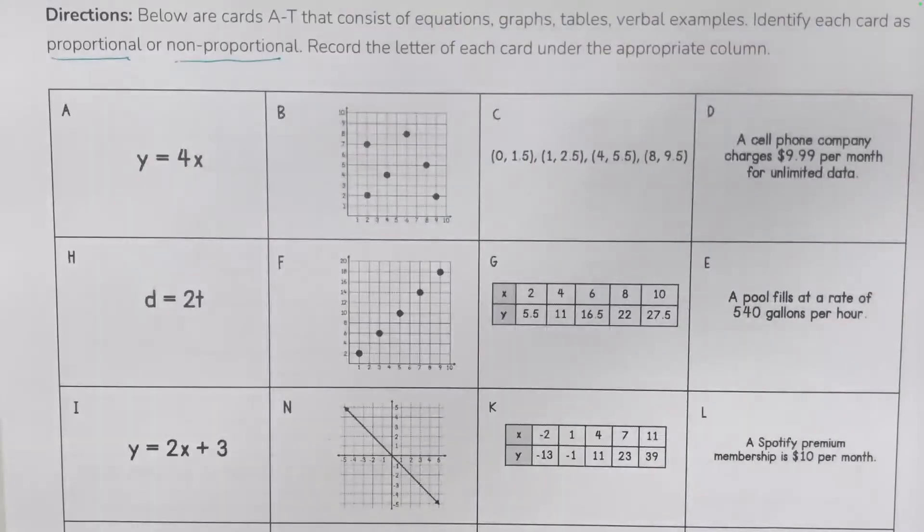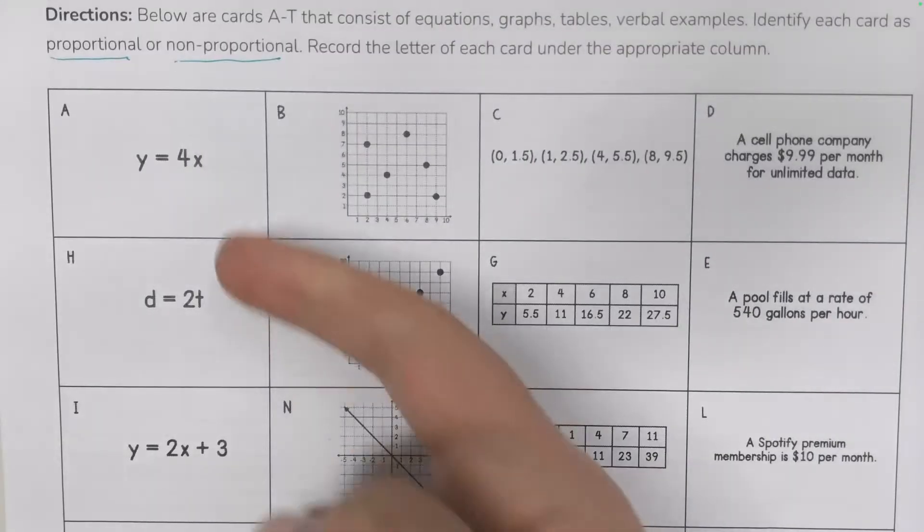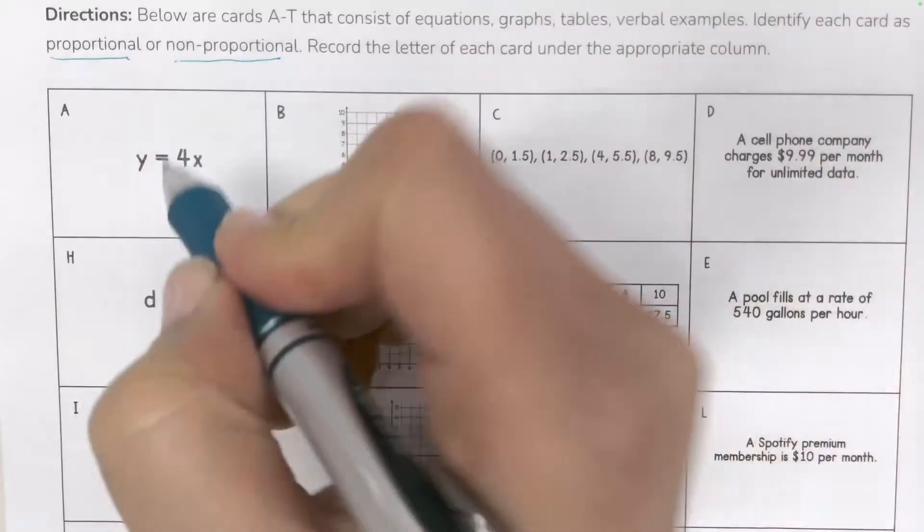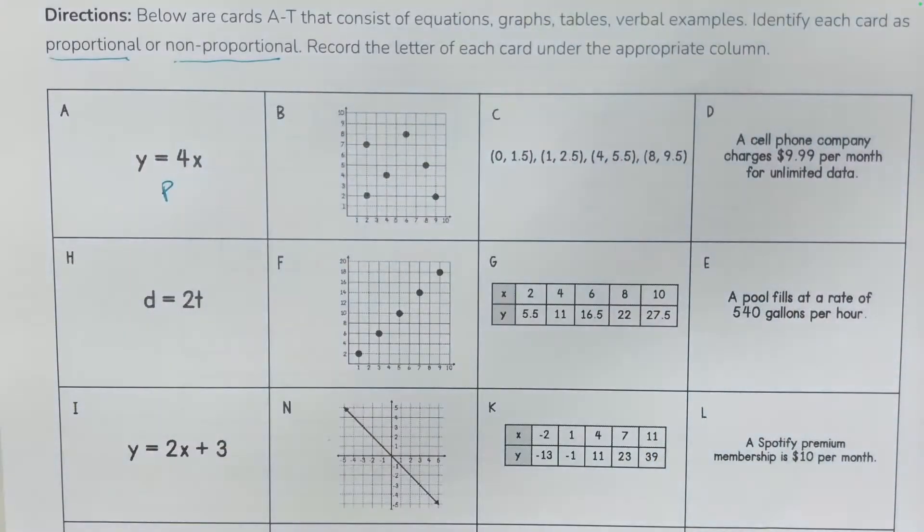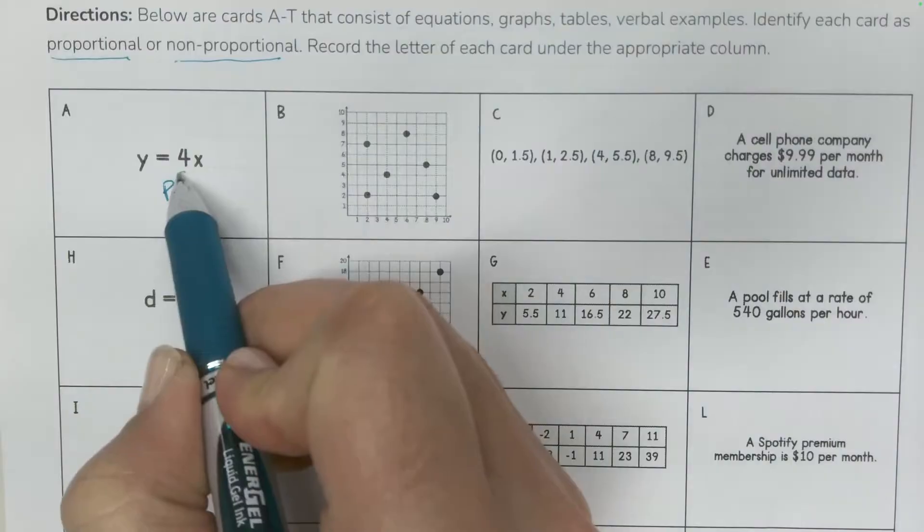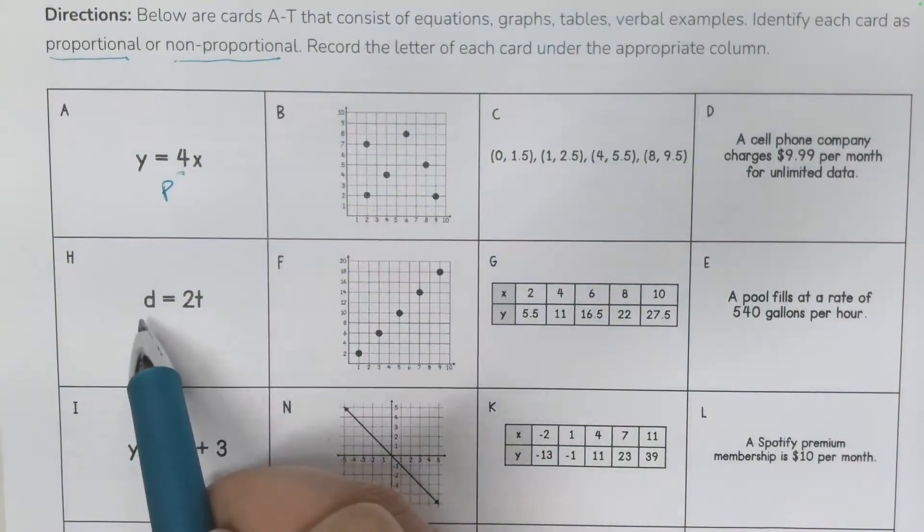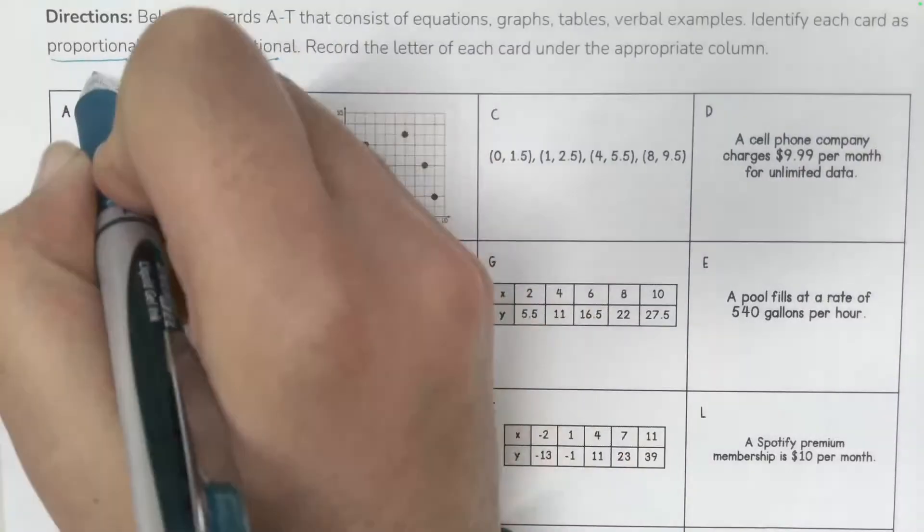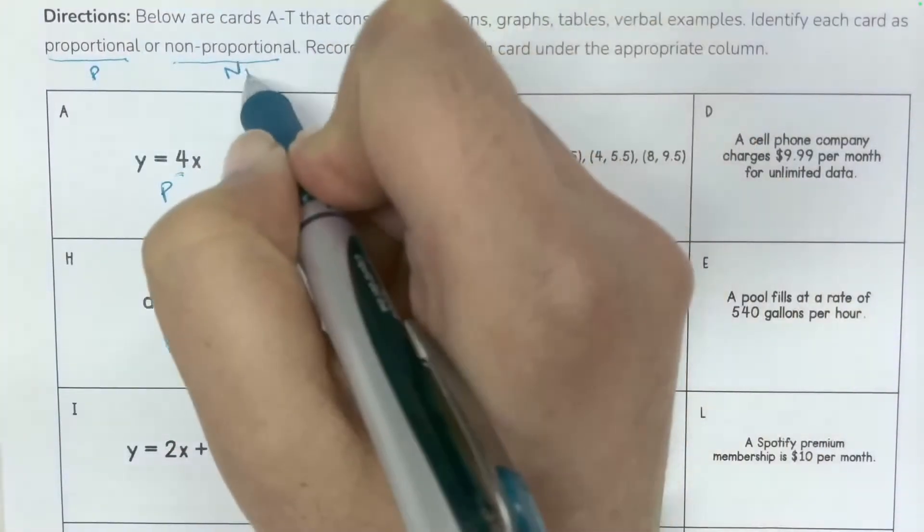So when we look here, which ones of this do we already see is proportional? So here we have a proportional relationship because it's y equals kx. We have a variable equals a constant times another variable. So this is proportional. I'm calling P proportional and not proportional, NP.